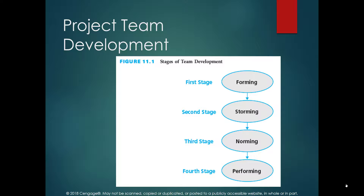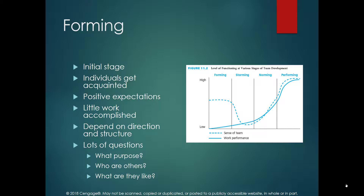The team development process tries to collect different sets of skills and has four steps: first is Forming, then Storming, then Norming, and then Performing. These are the four steps we need to follow in project team development, and we will explain each of these activities.